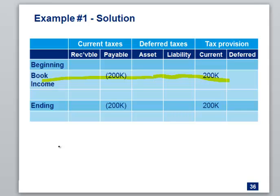How do I calculate my effective tax rate? Tax expense of $200,000 divided by pre-tax income of $500,000 gives us an effective tax rate of 40%. That's pretty easy — it helps when there's no differences. It does not get easier than that.